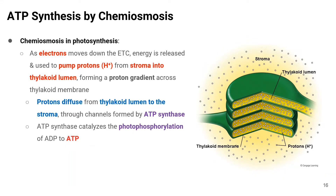I'm going to explain ATP synthesis by chemiosmosis. Shown here is a figure of the thylakoid. The thylakoid is enclosed within the thylakoid membrane. The space within the thylakoid is called the thylakoid lumen or thylakoid space, and the fluid surrounding the thylakoid is called the stroma.